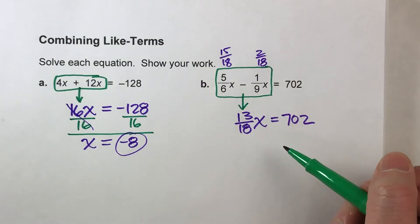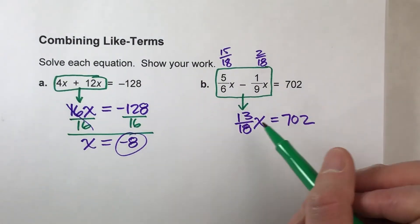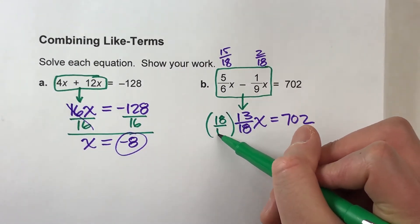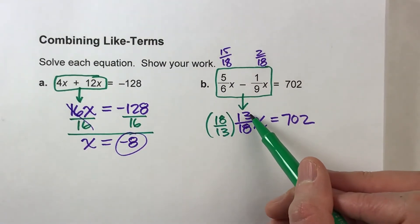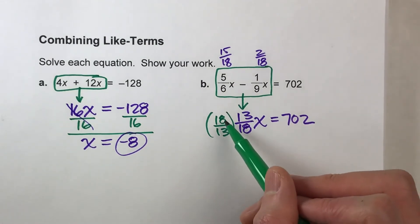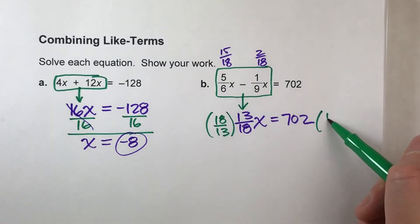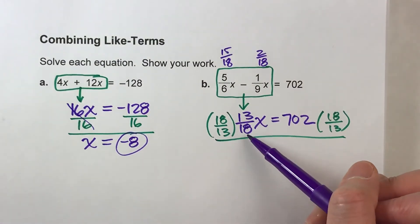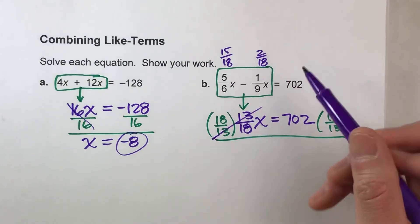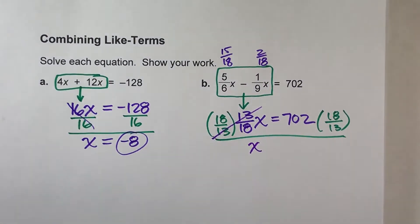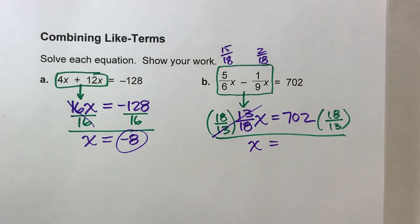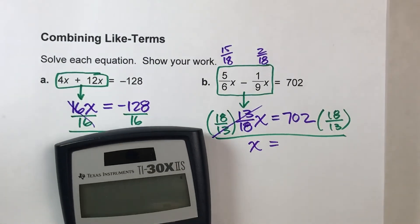The way you undo a fraction is you multiply both sides by the reciprocal. So instead of 13/18ths, we're going to multiply both sides by 18/13ths. And when you do that, multiplying 13/18ths by 18/13ths makes all of this just 1x. And then on the other side, 702 times all that, well, we need a calculator. So let's do that.